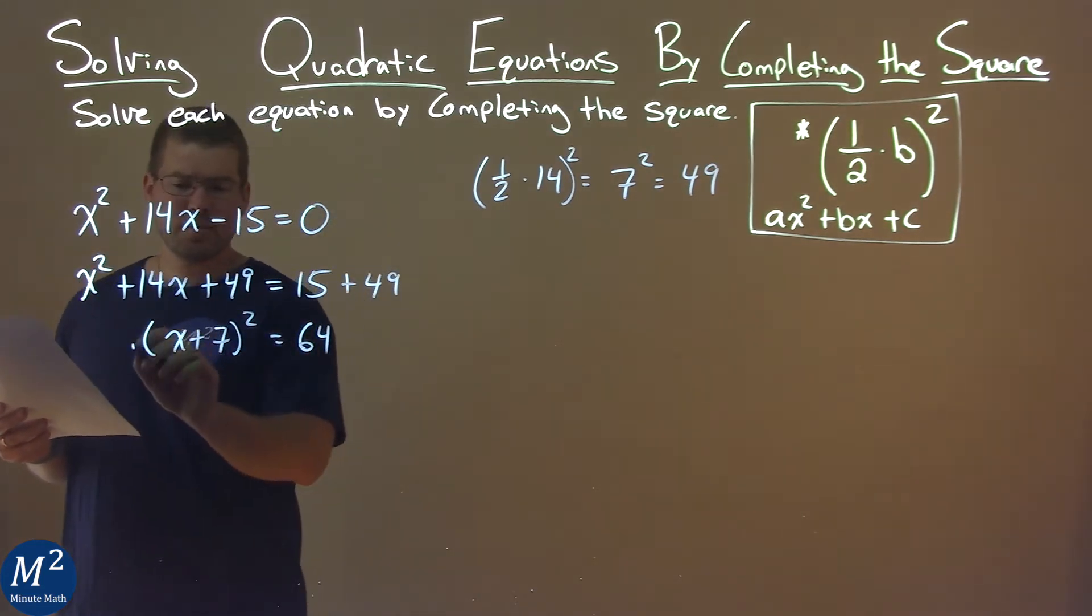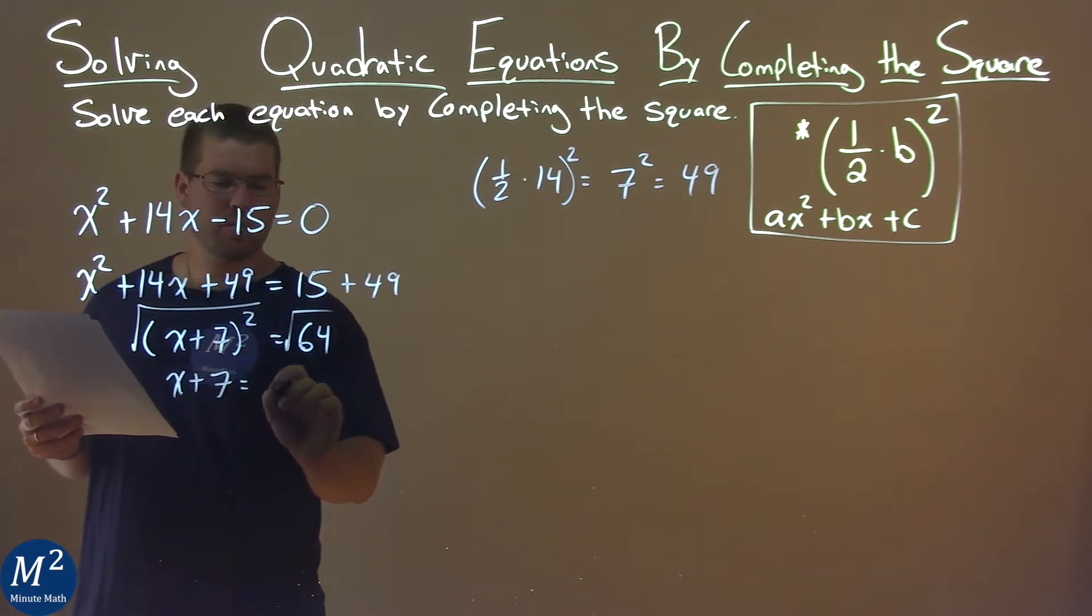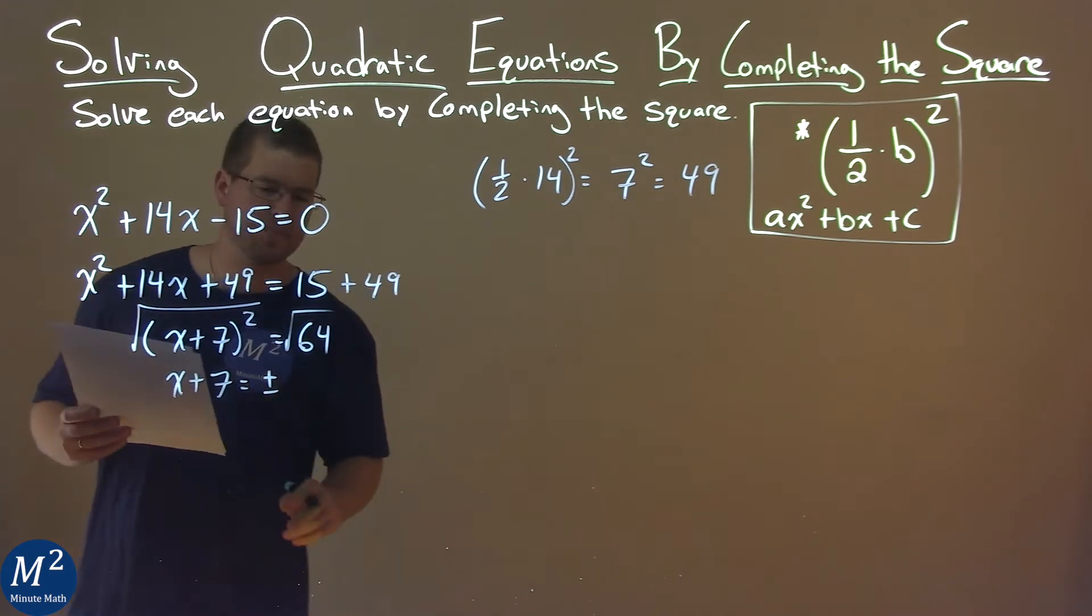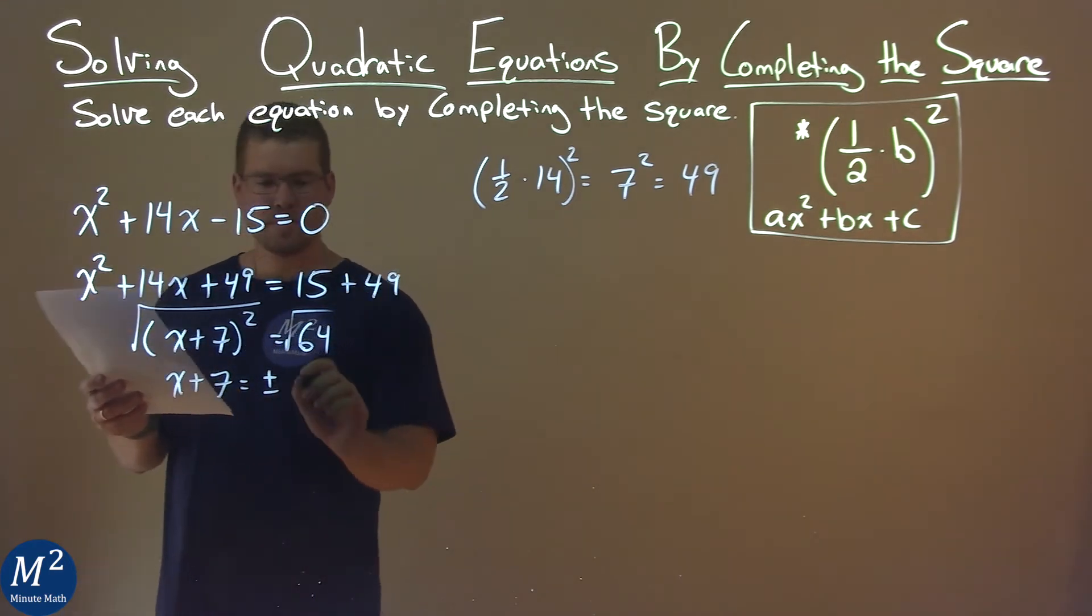We now have to take the square root of both sides of the equation, and we have x plus 7 equals plus or minus, because we took the square root of an equal sign, and the square root of 64 is an 8.